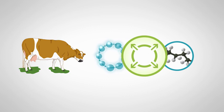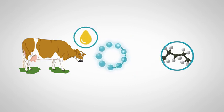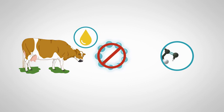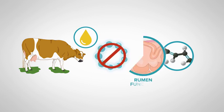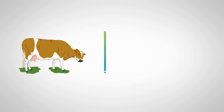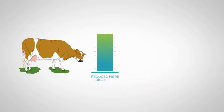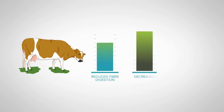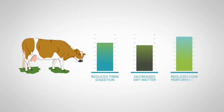However, if the cow's diet contains too much fat, the biohydrogenation process is overwhelmed, the fatty acids cannot be saturated, and rumen function is reduced. This results in reduced fibre digestion, decreased dry matter intake, and ultimately reduced cow performance.